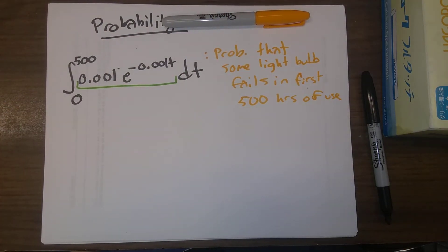So because we're integrating from 0 to 500, that's saying this is going to give us the probability that a light bulb fails in the first 500 hours that it's being used.